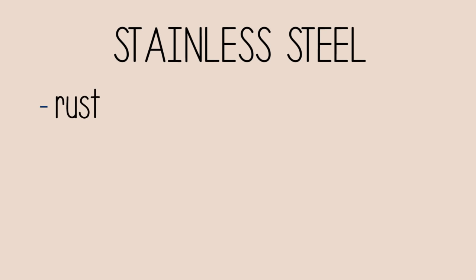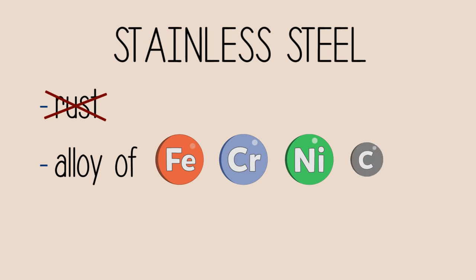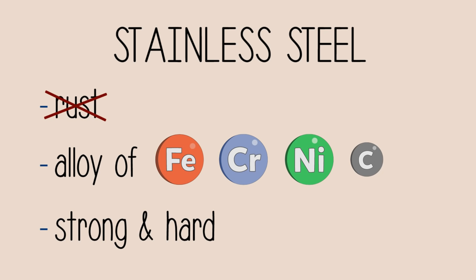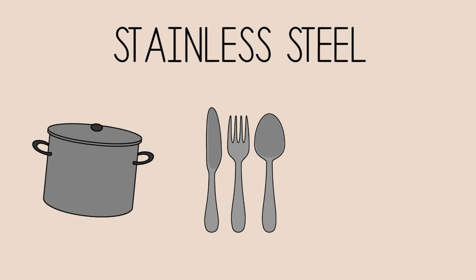Stainless steel, as implied in its name, does not rust. Stainless steel is an alloy of iron, chromium, nickel, and a small percentage of carbon. Stainless steel is very strong and hard. Therefore, it is used to make many cutlery, some types of cookware, and industrial equipment.